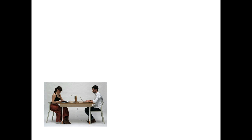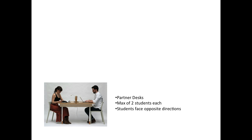Now let's talk about the desks in these rooms. These desks are very strange — they're called partner desks, and two people can sit at each desk. The most number of students that can sit at a desk is two. The interesting thing about these partner desks is that the students are facing each other, which also means they're facing opposite directions. It's actually very important that you understand that students sit two to a desk and they face in opposite directions.